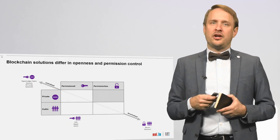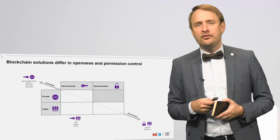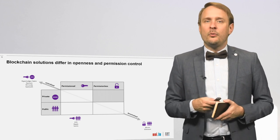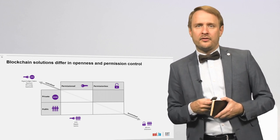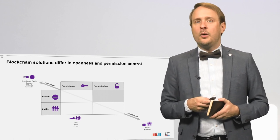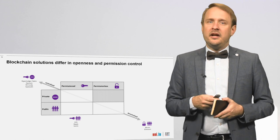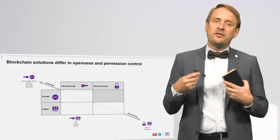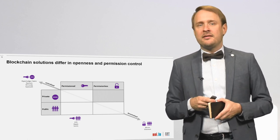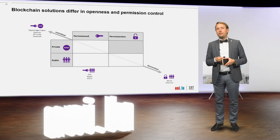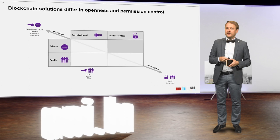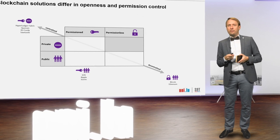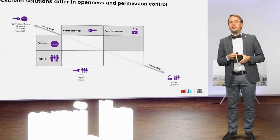We've now seen public blockchain networks like Bitcoin or Ethereum that are permissionless — everyone can use them without registering. We've also seen private permissioned blockchain networks that build upon proof of authority with pre-registered participants. There are also public permissioned blockchain networks that are in principle open to everyone but require some kind of registration. In general, the more private and permissioned a blockchain network is, the more it is considered centralized; the more public and permissionless, the more it is considered decentralized.